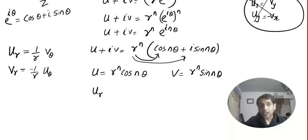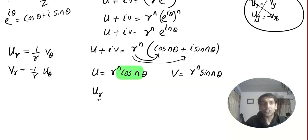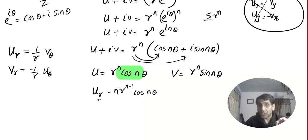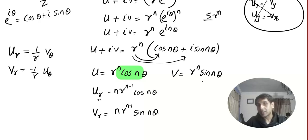Let's find u_r. Since r is the only variable, cos nθ is a constant, so we get n·r^(n−1) cos nθ. For v_r, similarly we get n·r^(n−1) sin nθ because theta is constant. For u_θ, r^n is constant, so the derivative of cos nθ gives −n·r^n sin nθ.